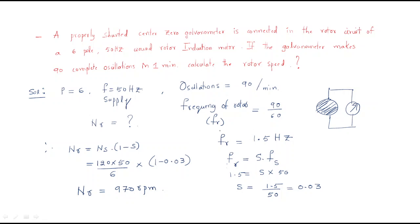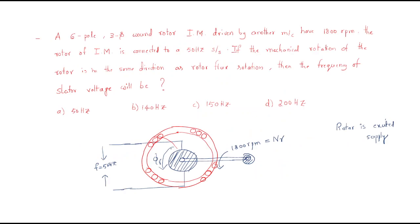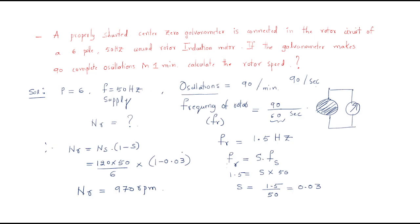So when oscillations are given, the oscillations themselves represent the rotor frequency. You should convert from per minute to per second by dividing by 60 to get the rotor frequency. This covers two different problem types: one where supply is given to the rotor, and another where the rotor has oscillations from a galvanometer. I hope all of you understood the session — thank you.